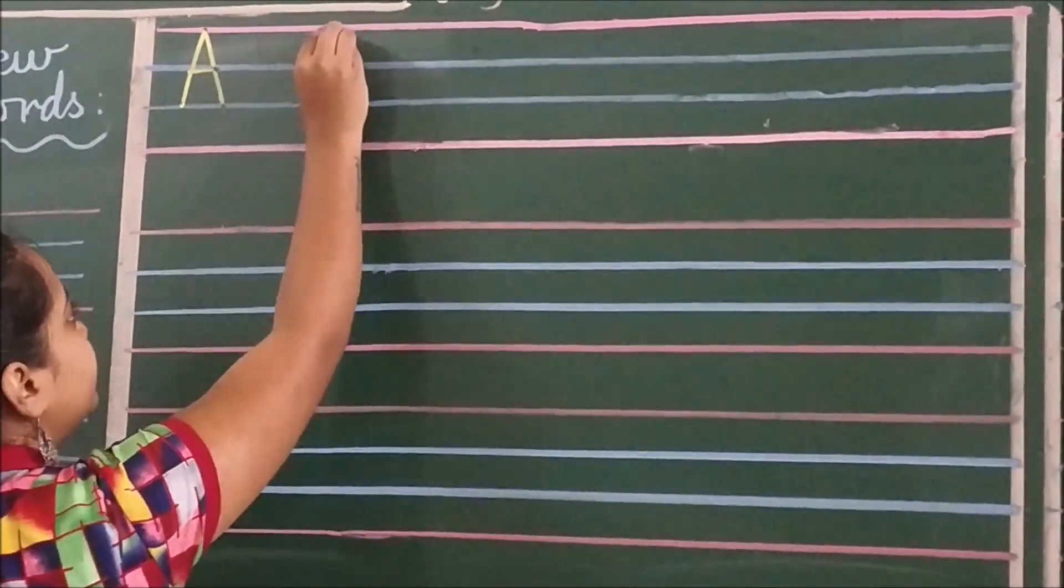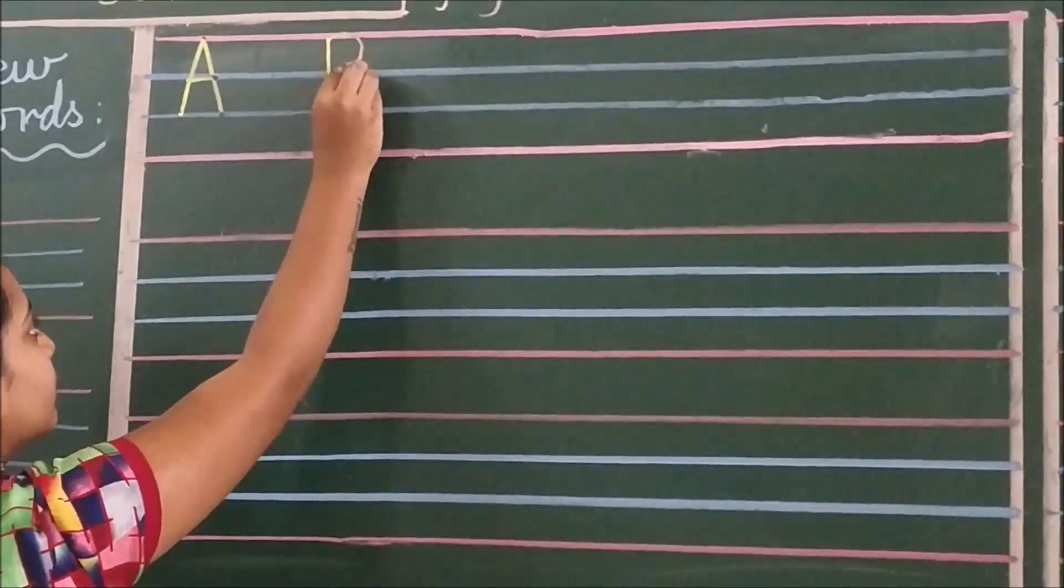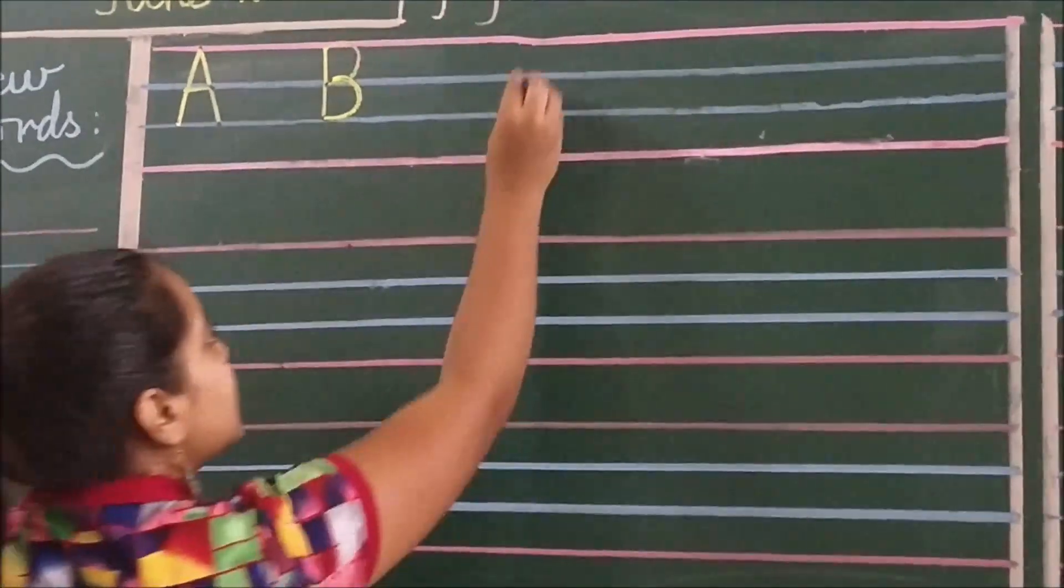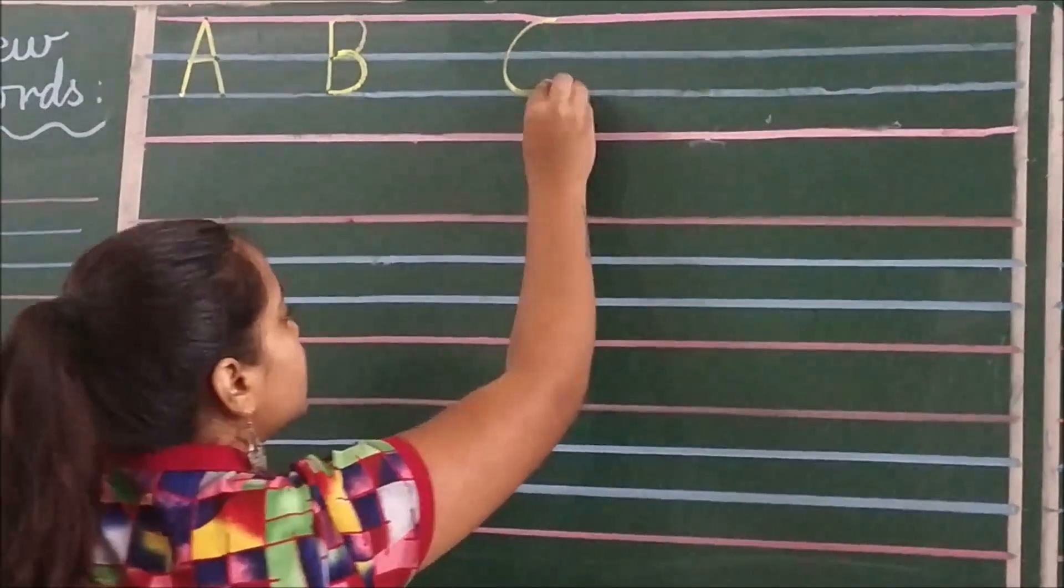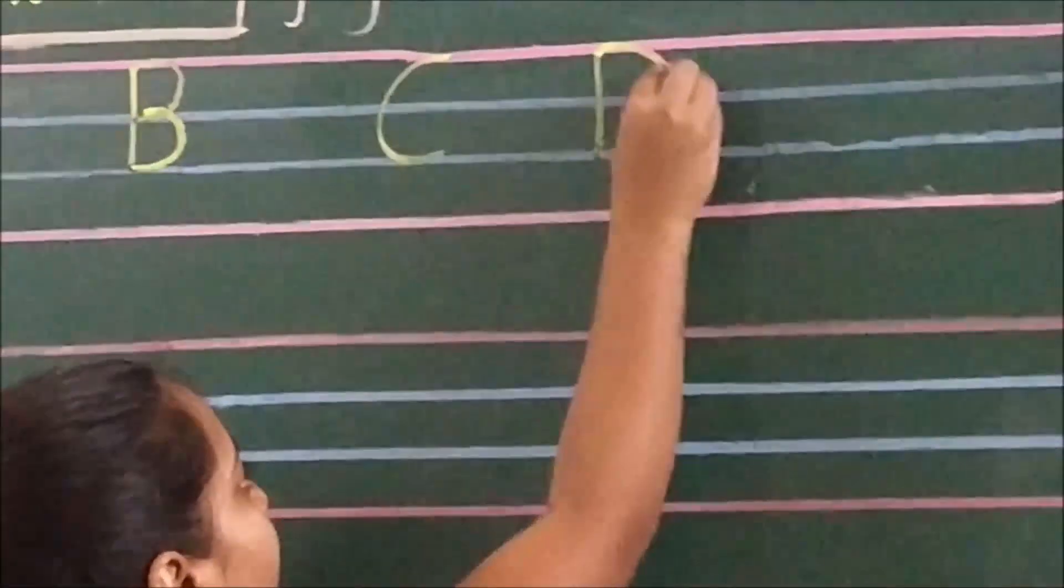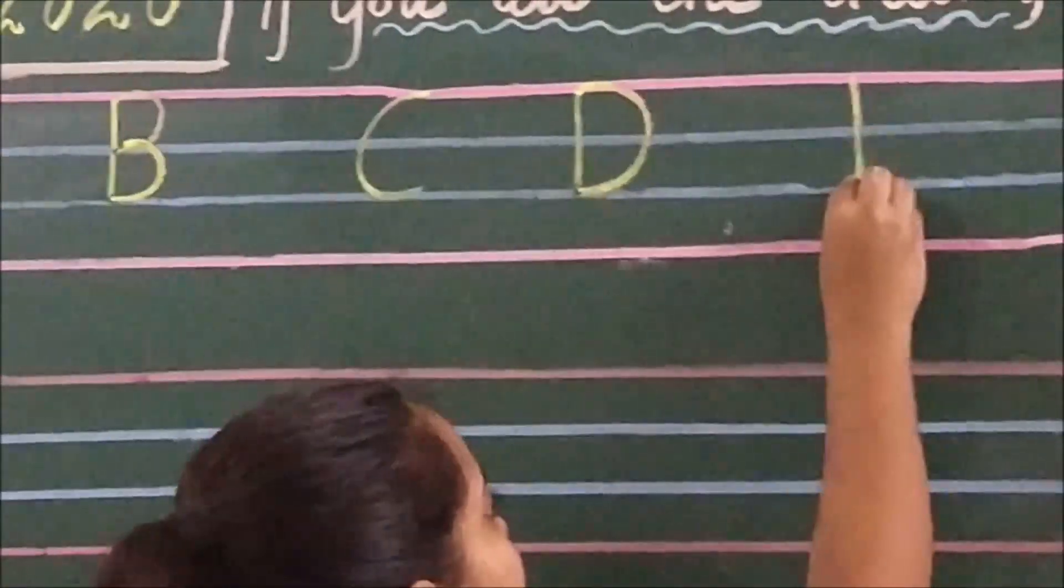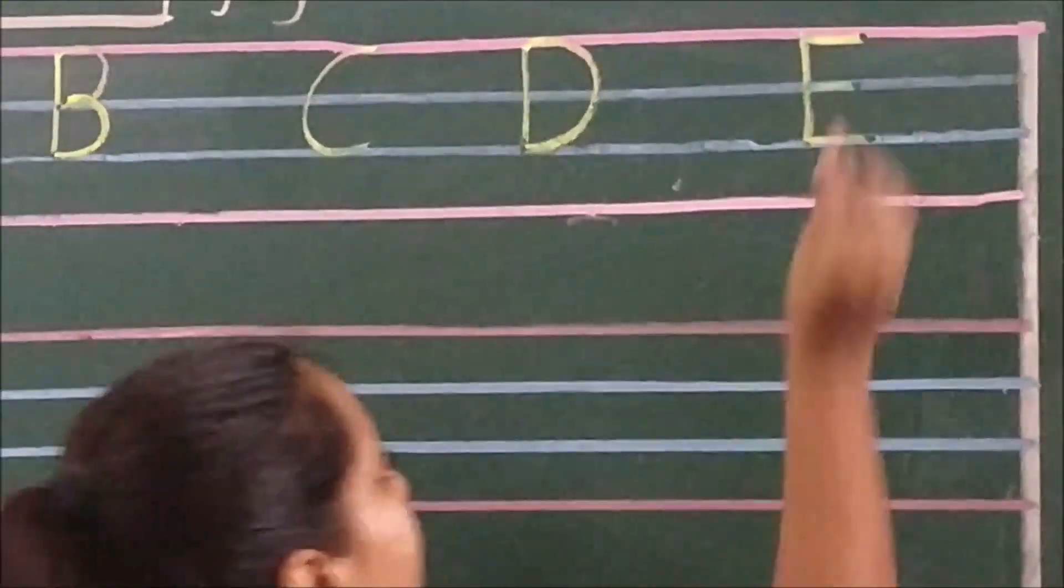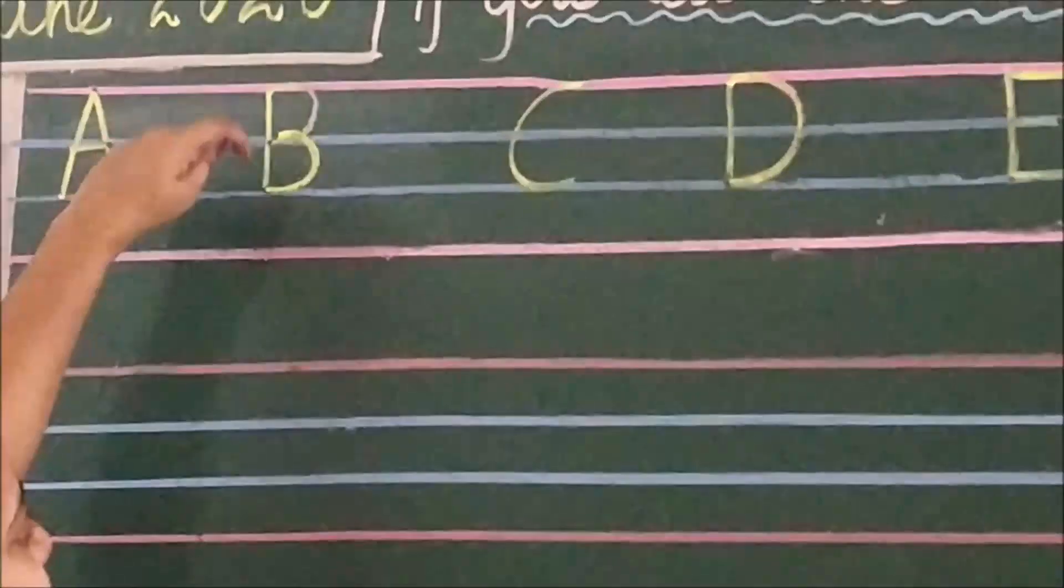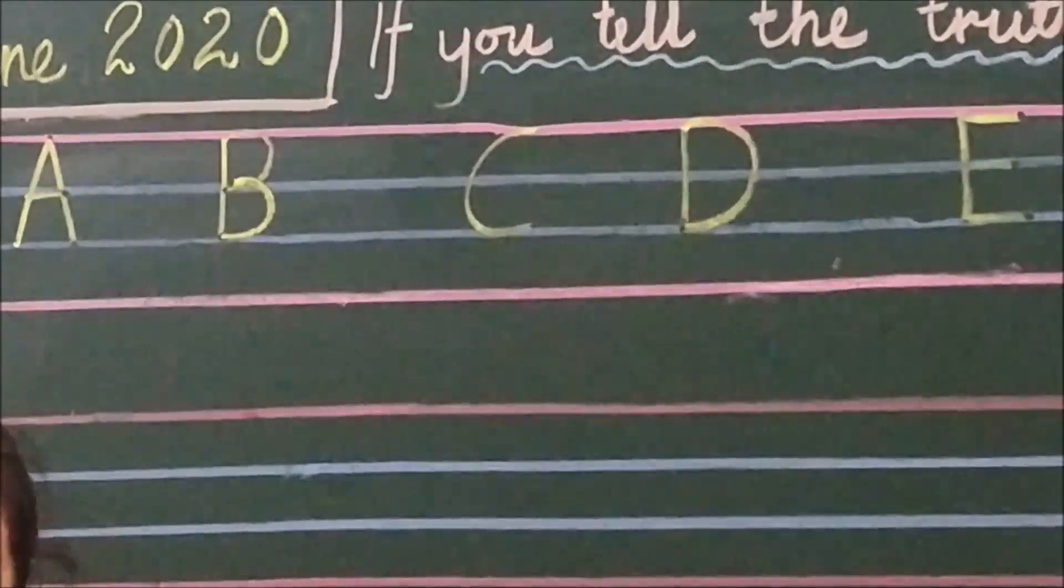Now we write B. A straight line and two curves. C. D. And E. Can you see children, how I have touched the red and blue line properly? Even you have to do the same, alright.